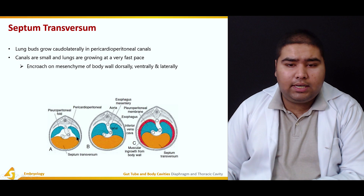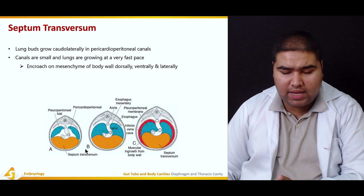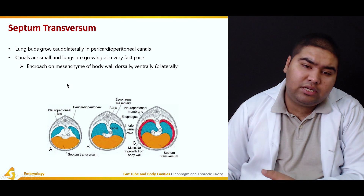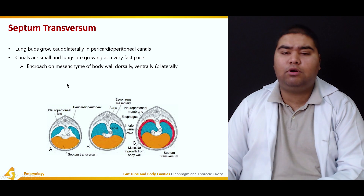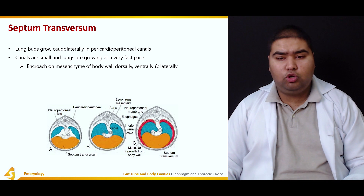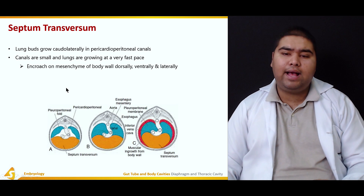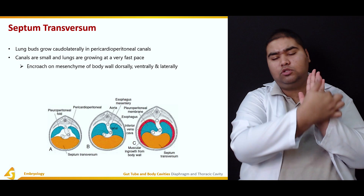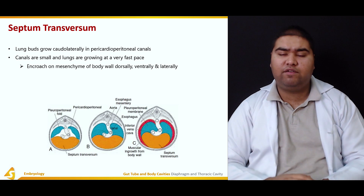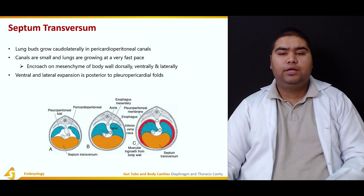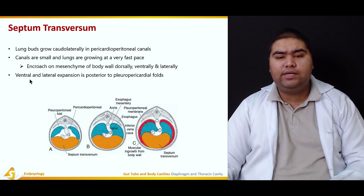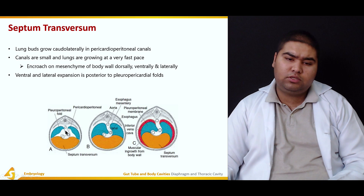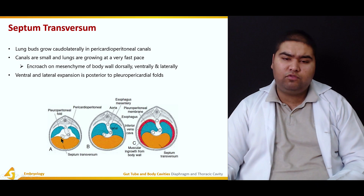The canals are small and the lungs are growing at a very fast pace — these are narrow spaces. So the lungs tend to encroach on the mesenchyme of the body wall dorsally, ventrally, and laterally. Ventral and lateral expansion is posterior to the pleuro-pericardial folds.